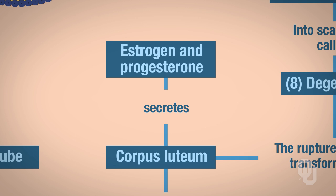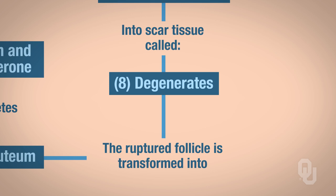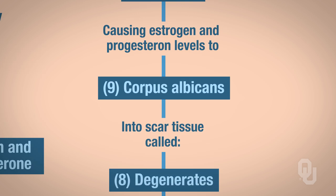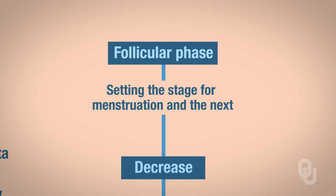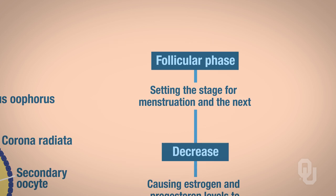If the oocyte is not fertilized, the corpus luteum will degenerate and you're left with what's called the corpus albicans. Because you no longer have the corpus luteum, the levels of estrogen and progesterone will decrease, and that sets the stage for the follicular phase to occur all over again in the following month.